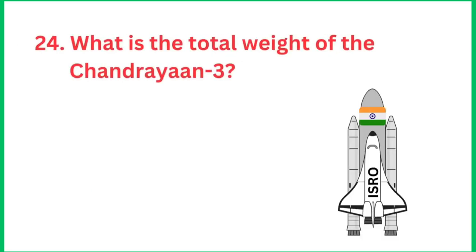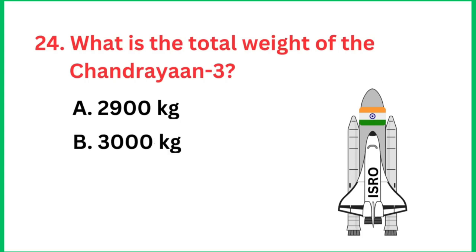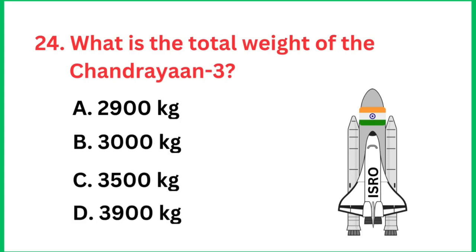What is the total weight of Chandrayaan 3? The total weight of all modules — propulsion module, lander module, and rover — is 3900 kg.